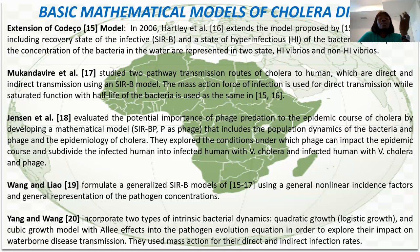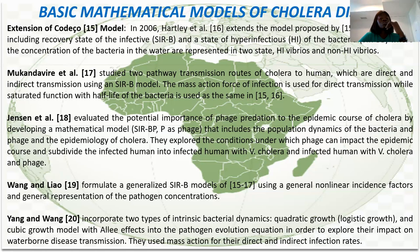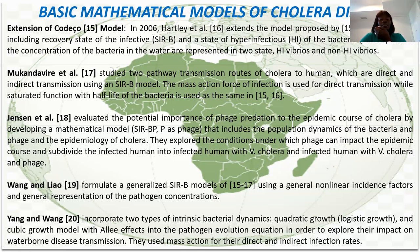Another dimension of cholera modeling tried to look at the importance of flood dynamics to the epidemic cost of cholera by developing a model. In this case, not just bacteria, but also floods and the epidemiology of cholera were examined. They divided the human population into susceptible and infected compartments. There are also SR models with bacteria, and significant work has been done by Yang and Wang, who examined quadratic growth and logistic growth models with other effects in the pathogen evolution equation, to understand the impact of waterborne disease transmission.